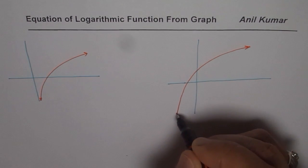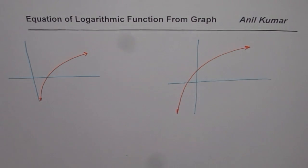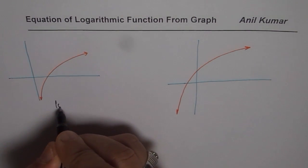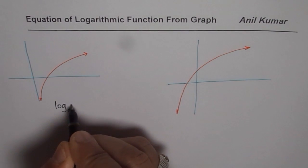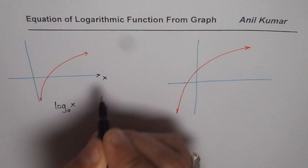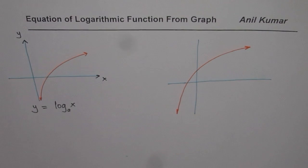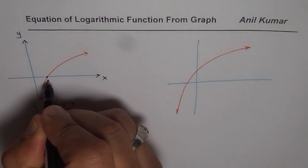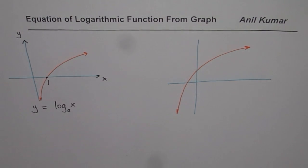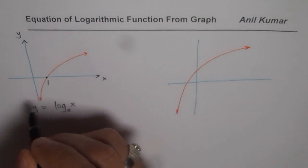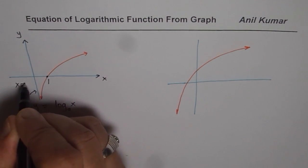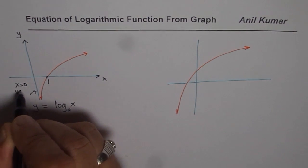We will write equations for both these graphs in this video. Let us begin with the very first one. Let us say the equation of this graph is log to the base a of x, where this is x and this is y. So we say y equals to log to the base a of x. From the given graph, the x-intercept is at 1, and we have a vertical asymptote at x equals to 0.